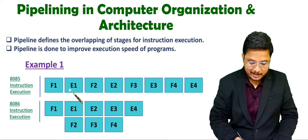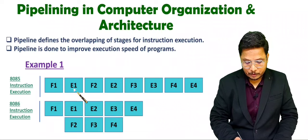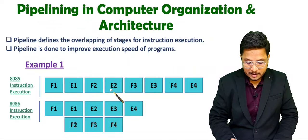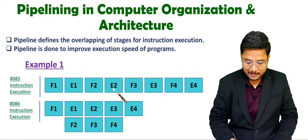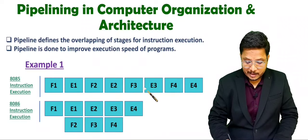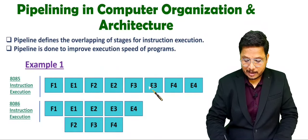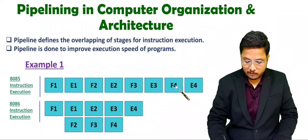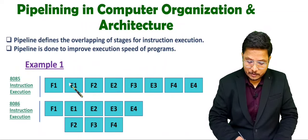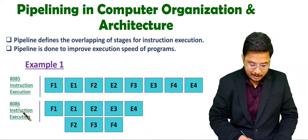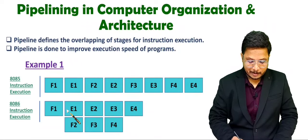F1 E1 means execution of the first instruction as per fetch 1 execute 1. Then F2 E2 means execution of the second instruction, F3 E3 means execution of the third instruction, and F4 E4 means execution of the fourth instruction. Now the same execution has been done in the 8086 but with two-stage pipelining.